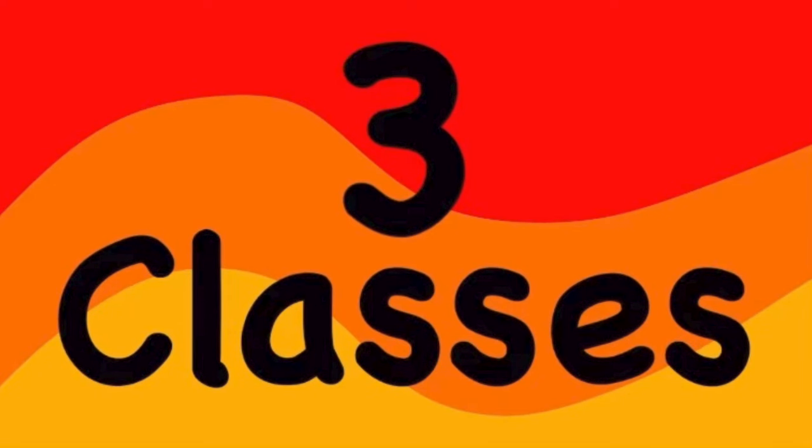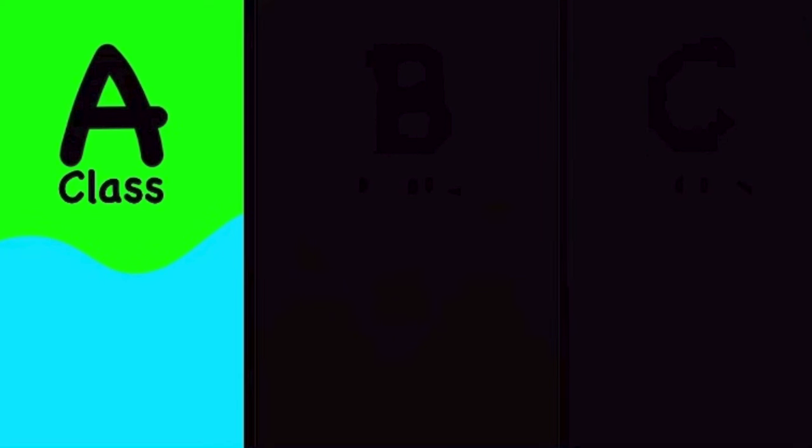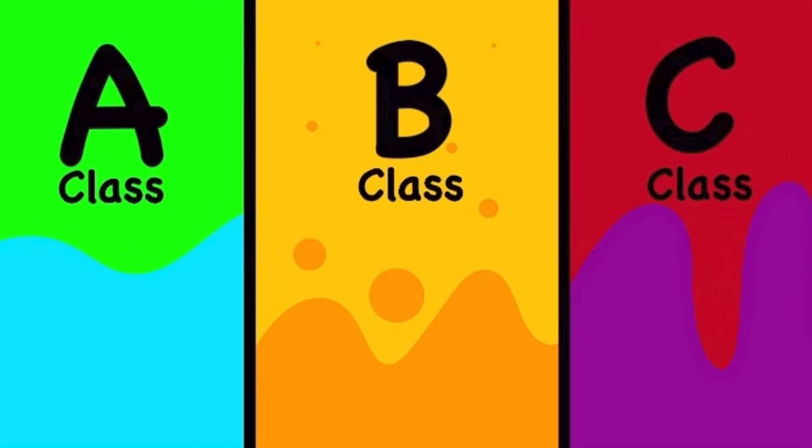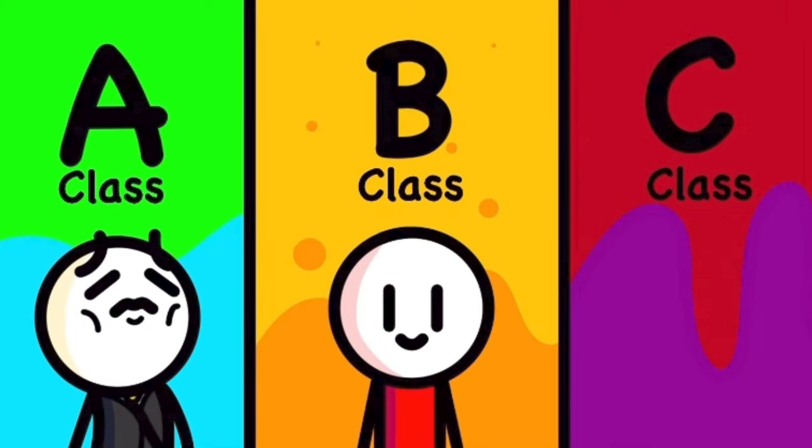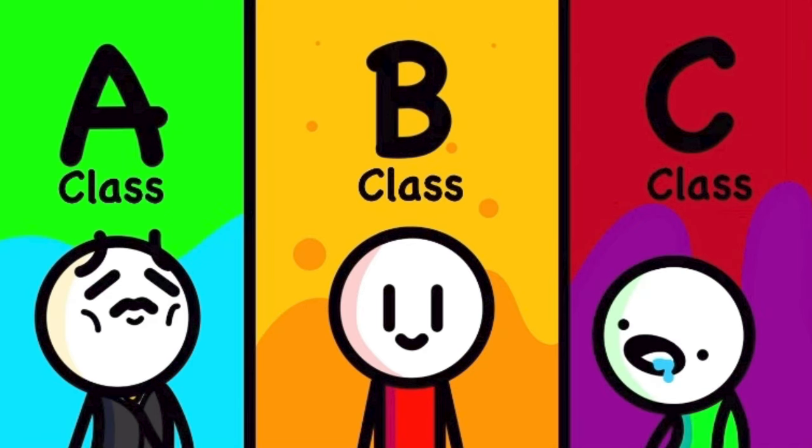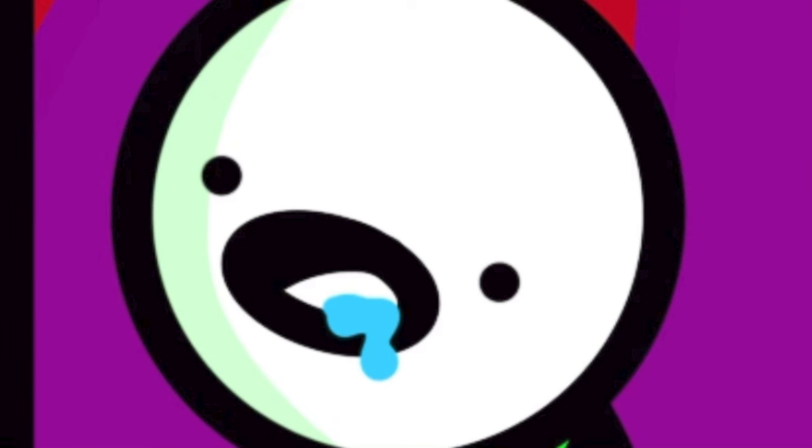So, there were three classes that our grade were split into. A class, B class, and C class. A class were the super smart kids. B class were the average kids. And C class, well, they were trying their best.